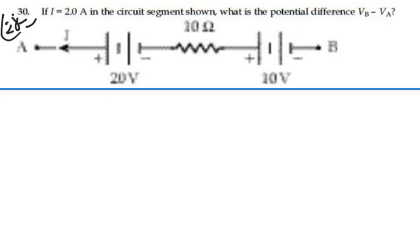We have this current flowing from right to left, so let's mark our batteries and resistors. Our batteries are already marked according to the long and short bar. But this current is flowing from right to left through this resistor, so we're going to have positive on the right, negative on the left.